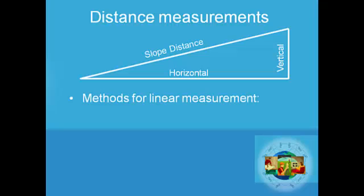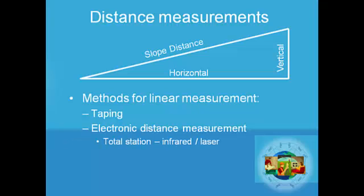We measure distances with multiple methods. Taping we don't do so much of anymore, but it's still essential as a manual check to our automated methods, so we're going to spend a little time dealing with taping in this course. We're going to spend quite a bit of time using electronic distance measurement techniques, which could include the use of a total station, and you'll get into those within probably the first month of the course. We can use either infrared light or laser, pulsed laser, to measure those distances.